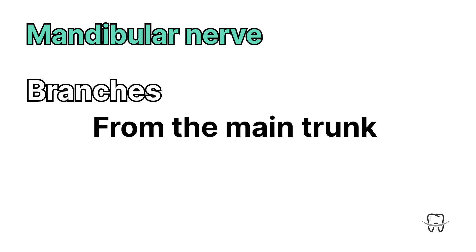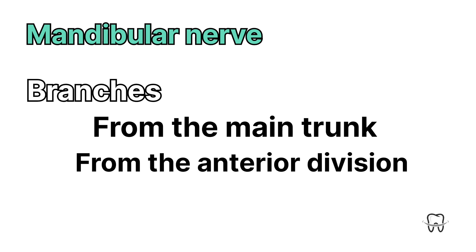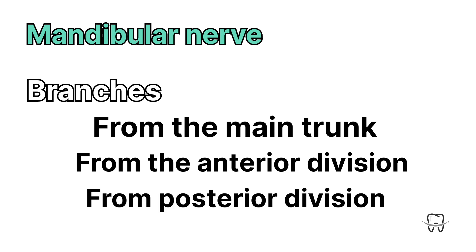Coming to the branches from the main trunk: sensory branch and motor branch. From the anterior division: masseteric nerve, deep temporal nerve, nerve to lateral pterygoid, and buccal nerve. From the posterior division: auriculotemporal nerve, lingual nerve, and inferior alveolar nerve.